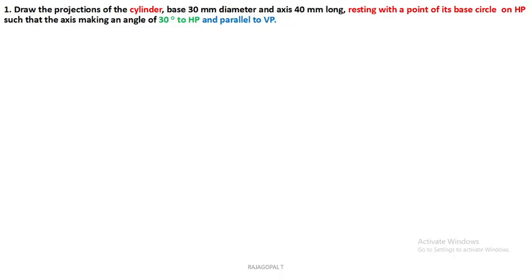The question states: draw the projections of a cylinder with a base 30 mm diameter and axis 40 mm long, resting with a point of its base circle on HP, such that the axis makes an angle of 30 degrees to HP and is parallel to VP. So the base circle is resting on HP.